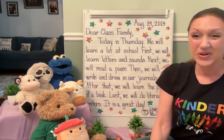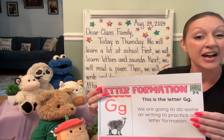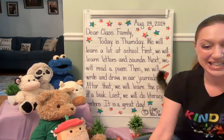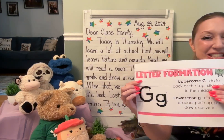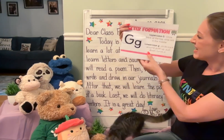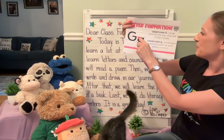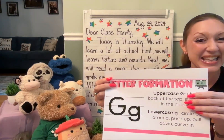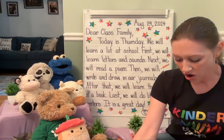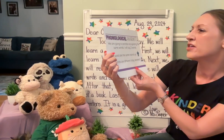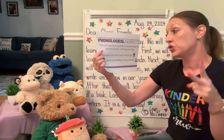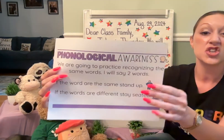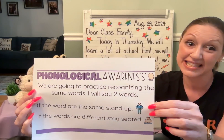Today we are doing the letter G — we're going to be sky writing letter G. We have a visitor — hi, Sugar! You're going to see a little kitten. We're going to make the letter G: starting at the top, circle back at the top, up, and then slide left in the middle. Lowercase g: circle back around, push up, pull down, curve in. We'll also be doing phonological awareness — practicing recognizing the same words. I will say two words; if the words are the same, you will stand up, and if they are different, you will stay seated.